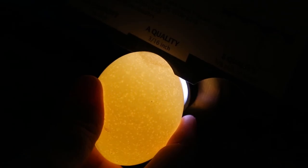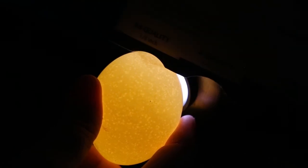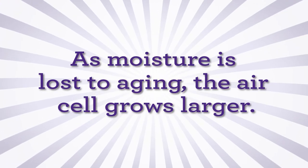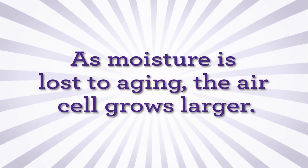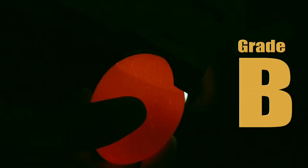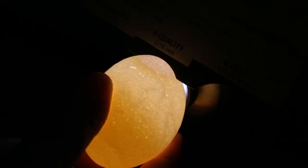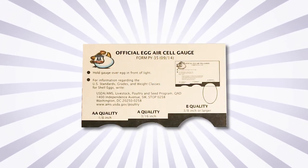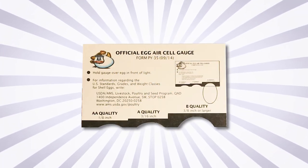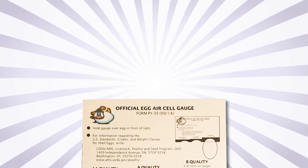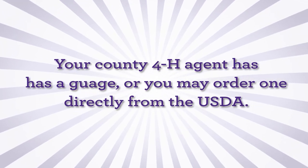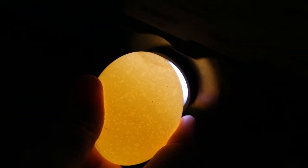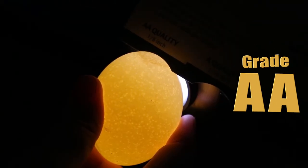Finally, check the size of the air cell. The larger it is, the lower the quality of the egg's interior. As moisture is lost to aging, the air cell grows larger. This is an air cell for a grade B egg. This is an air cell for a grade A egg. Measuring devices like an egg air cell gauge will help you learn the difference between air cell sizes. Your county 4-H agent has a gauge or you may order a gauge directly from the USDA. This is an example of a grade AA air cell.